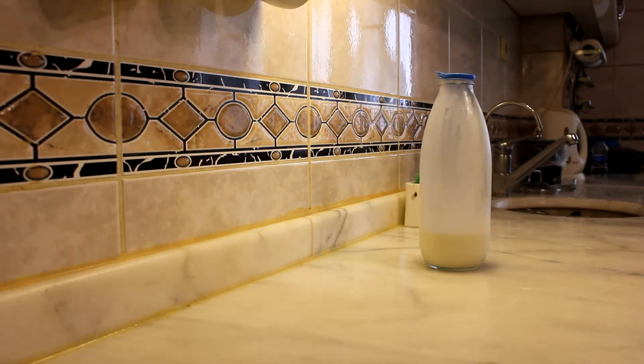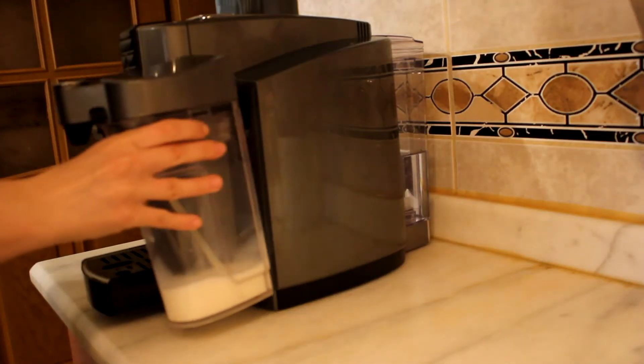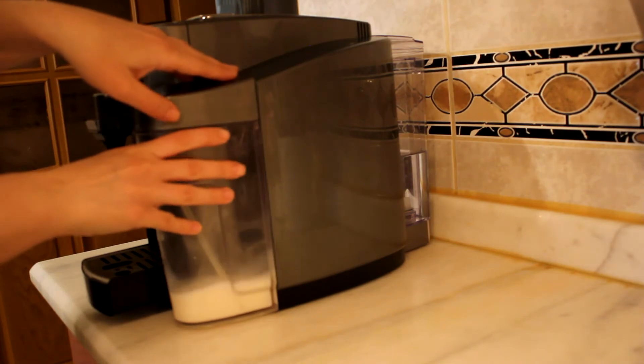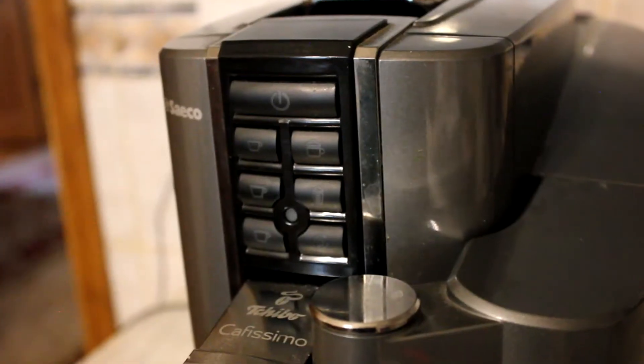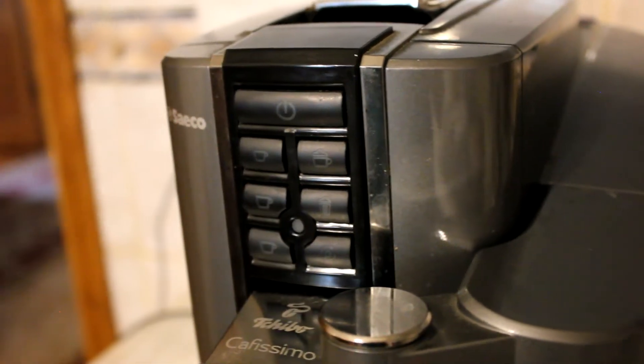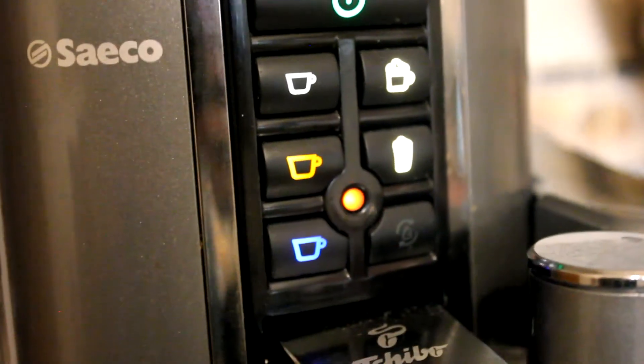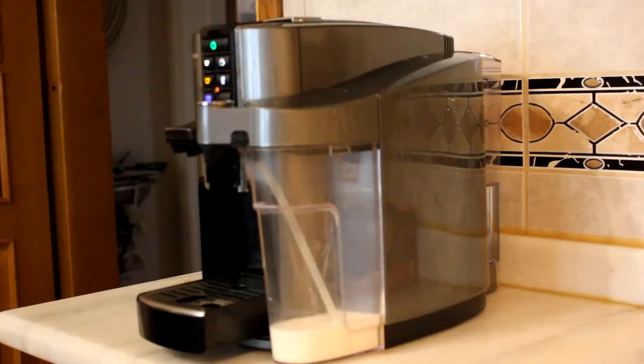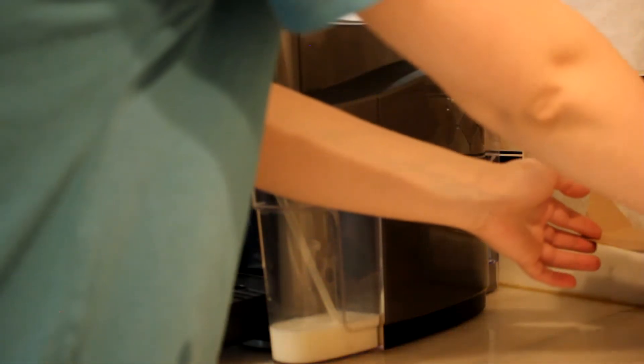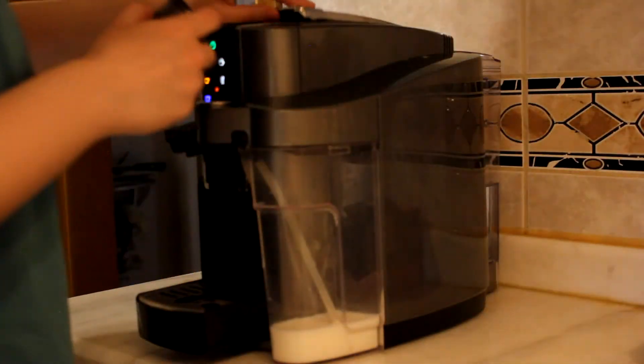About 20 seconds after pressing the power button on the front surface, all the lights are on. Now the machine is ready to use. By opening the top cover, you place the capsule horizontally and then close the cover.